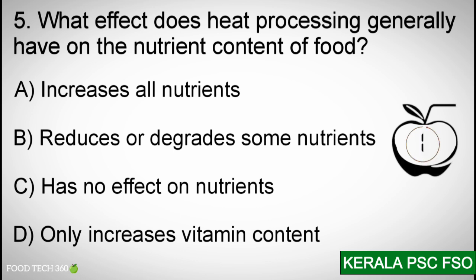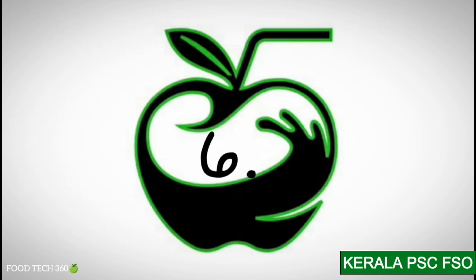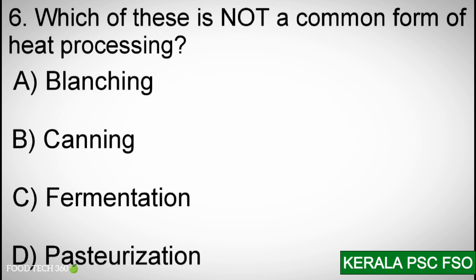Correct answer: B — Reduces or degrades some nutrients. Q6: Which of these is not a common form of heat processing? Options: A) Blanching, B) Canning, C) Fermentation, D) Pasteurization.